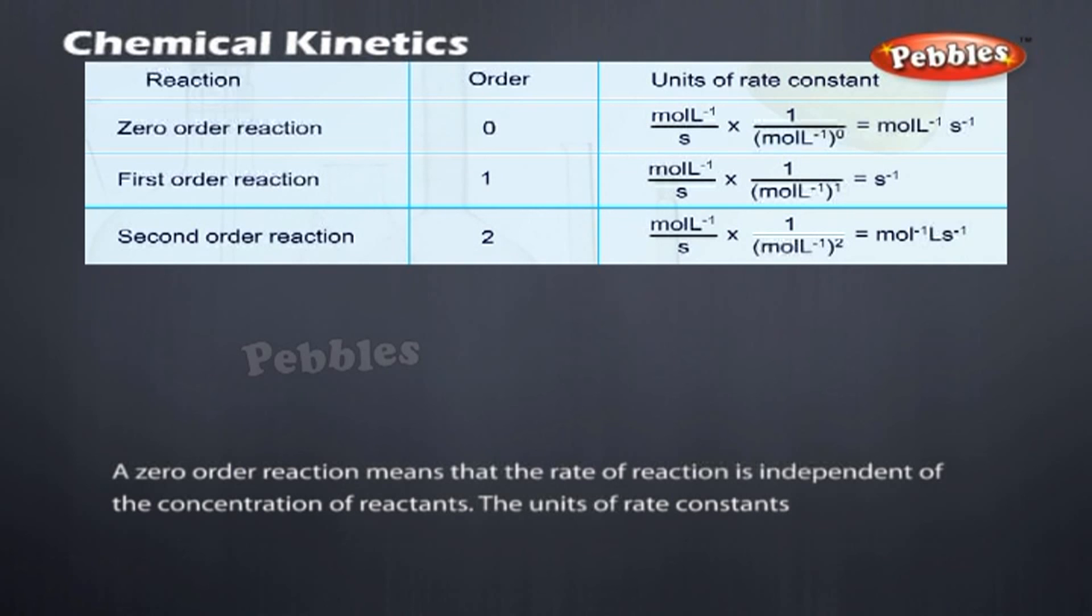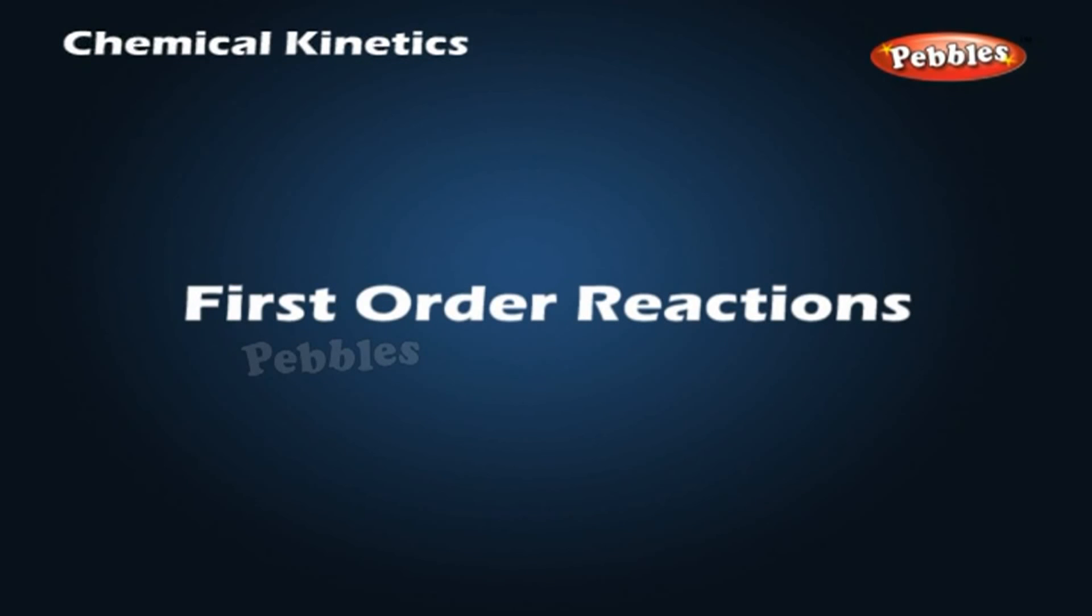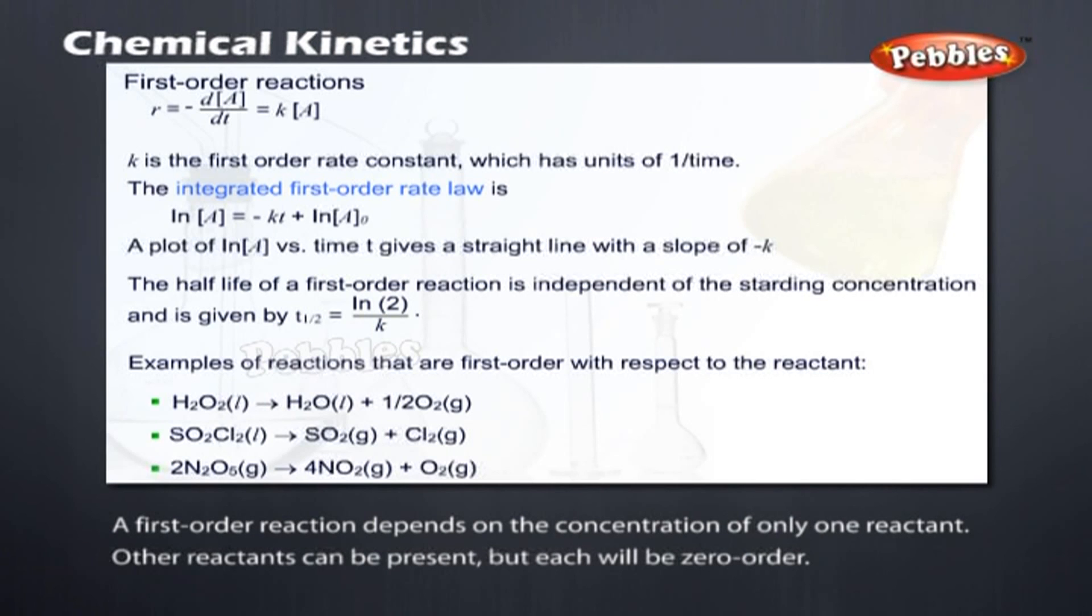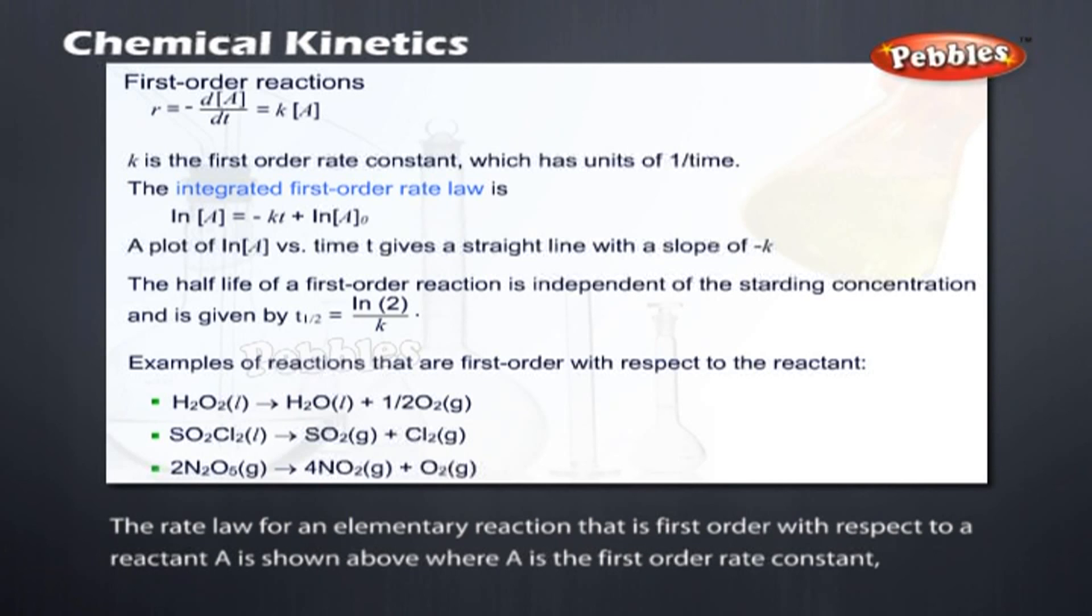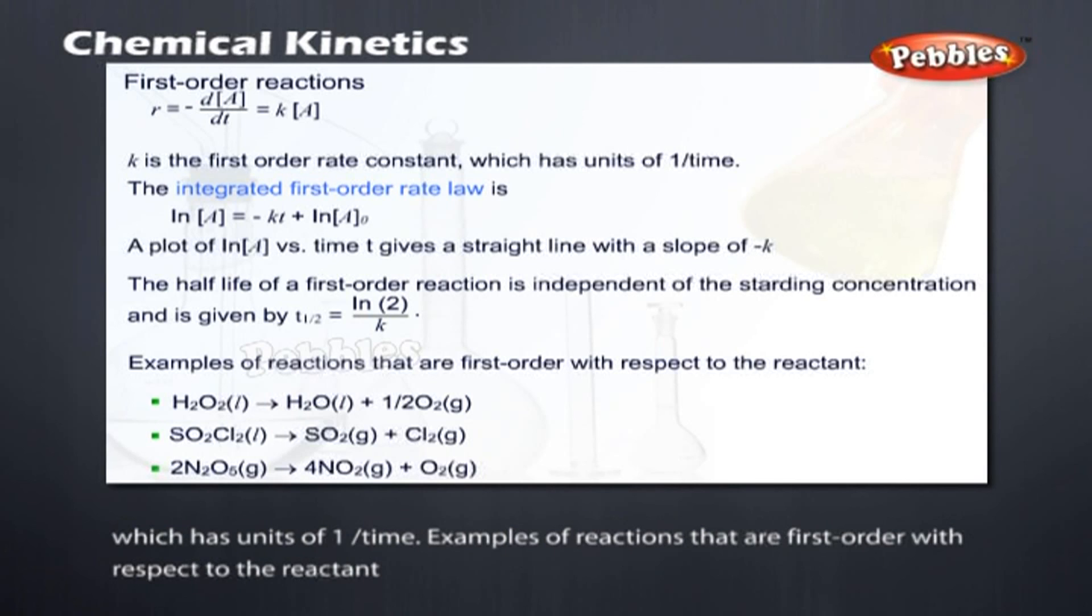The units of rate constants. First-order reaction. A first-order reaction depends on the concentration of only one reactant. Other reactants can be present, but each will be zero-order. The rate law for an elementary reaction that is first-order with respect to a reactant A is shown above, where K is the first-order rate constant, which has units of one over time. Examples of reactions that are first-order with respect to the reactant.